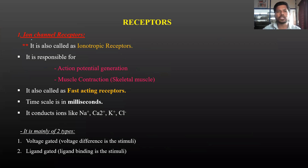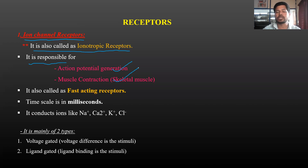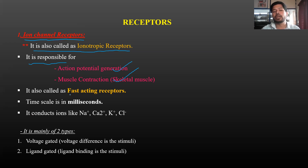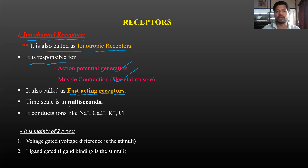The first type is ion channel receptors, also called ionotropic receptors. Their main function is to generate action potentials and are involved in skeletal muscle contraction, including depolarization, repolarization, and hyperpolarization. Ion channel receptors are called fast-acting receptors.